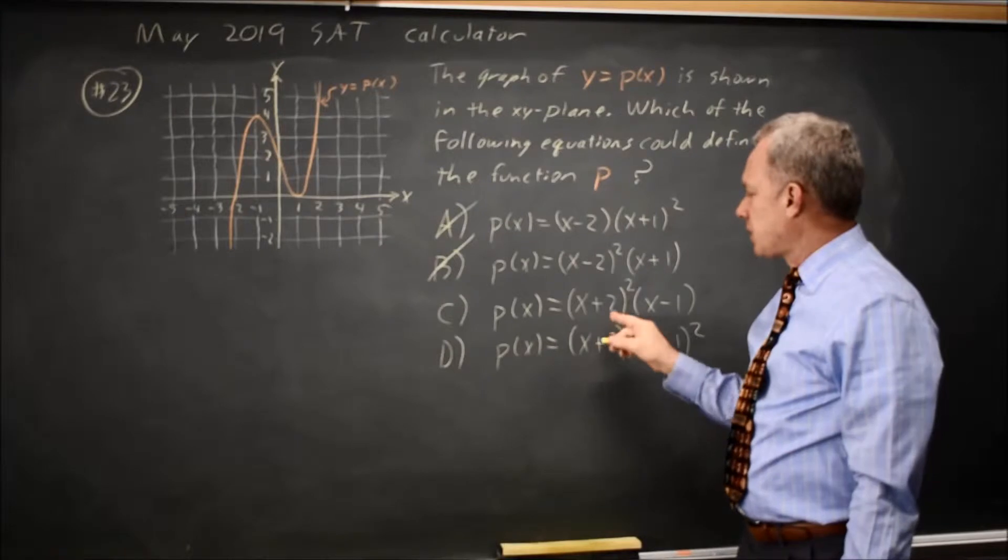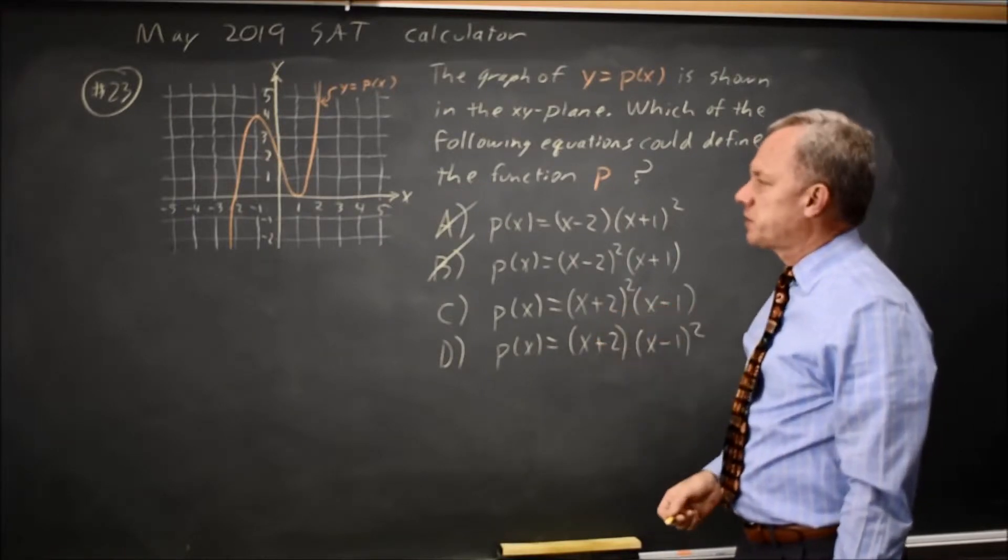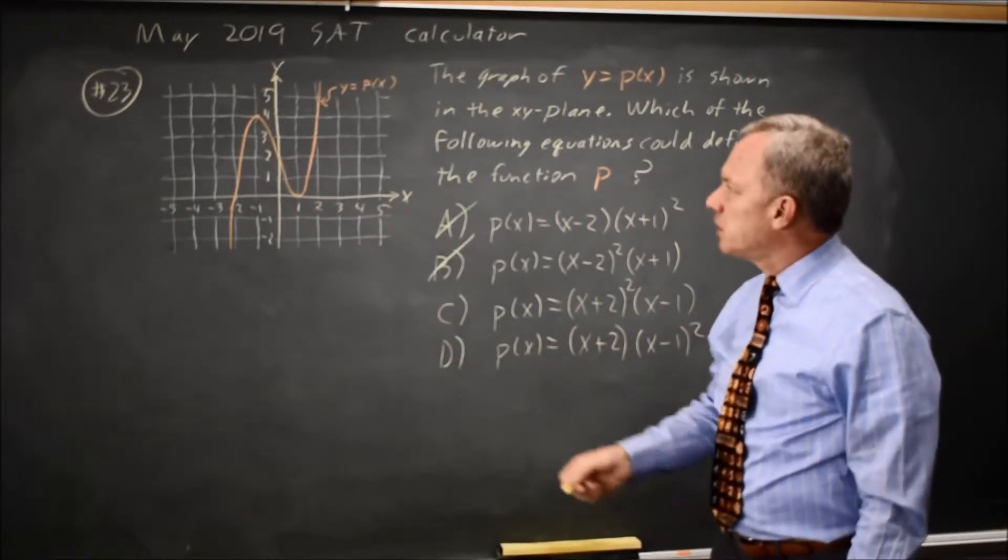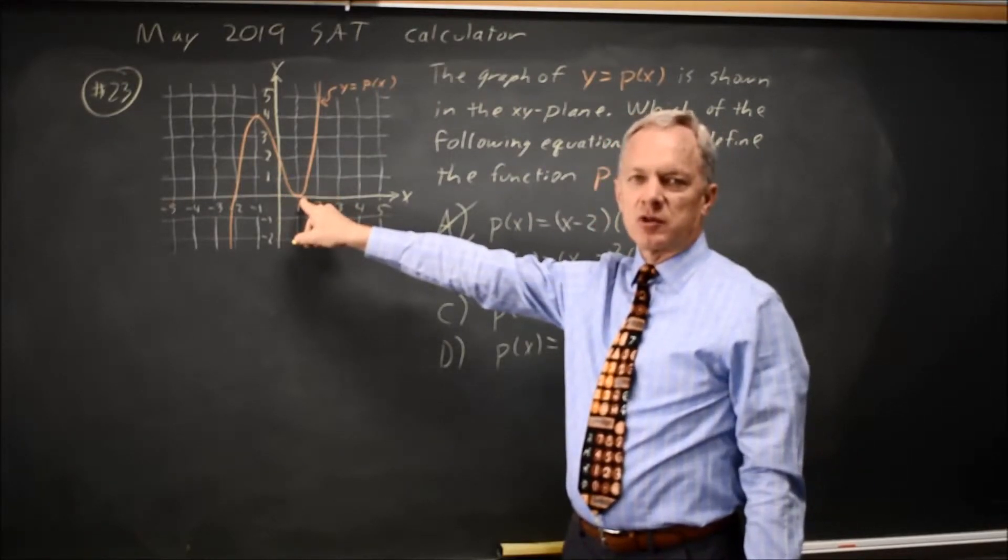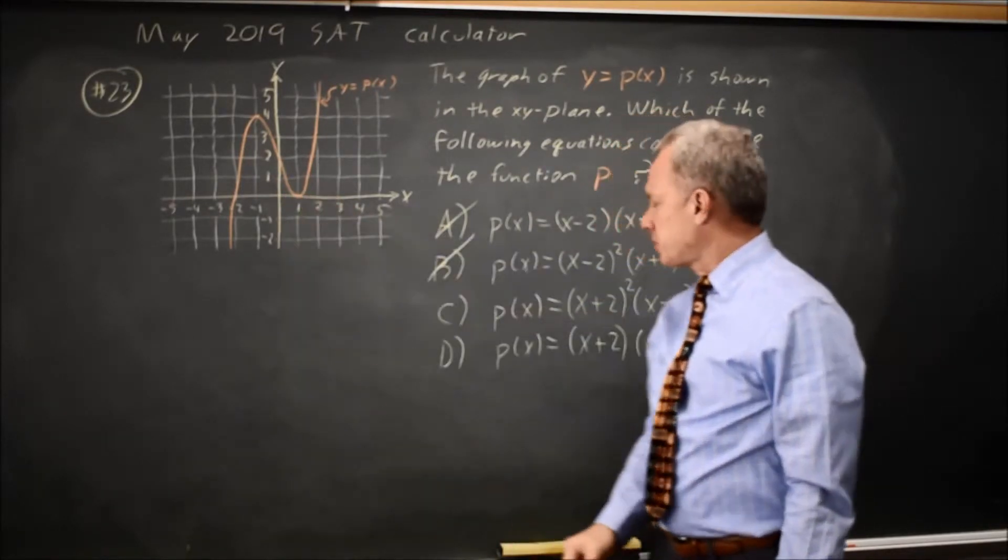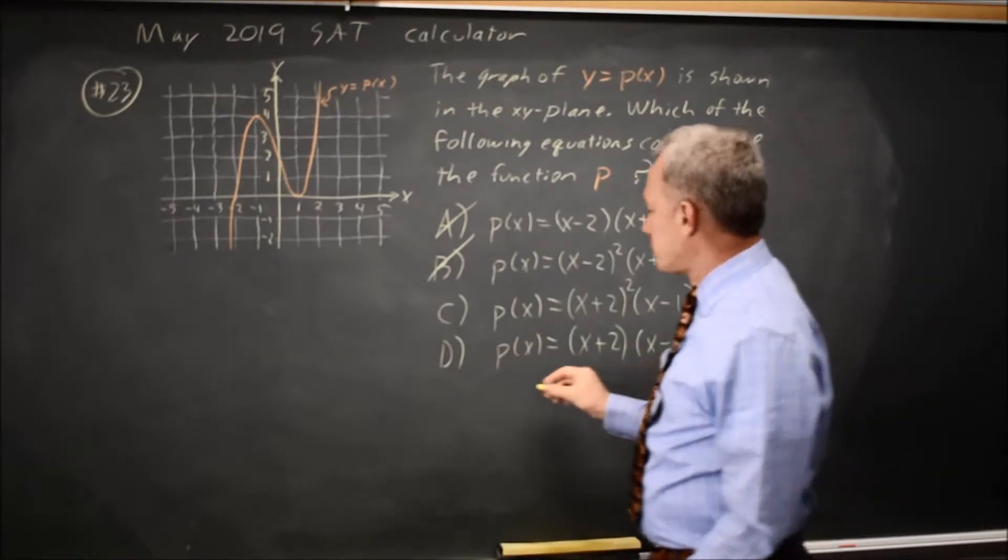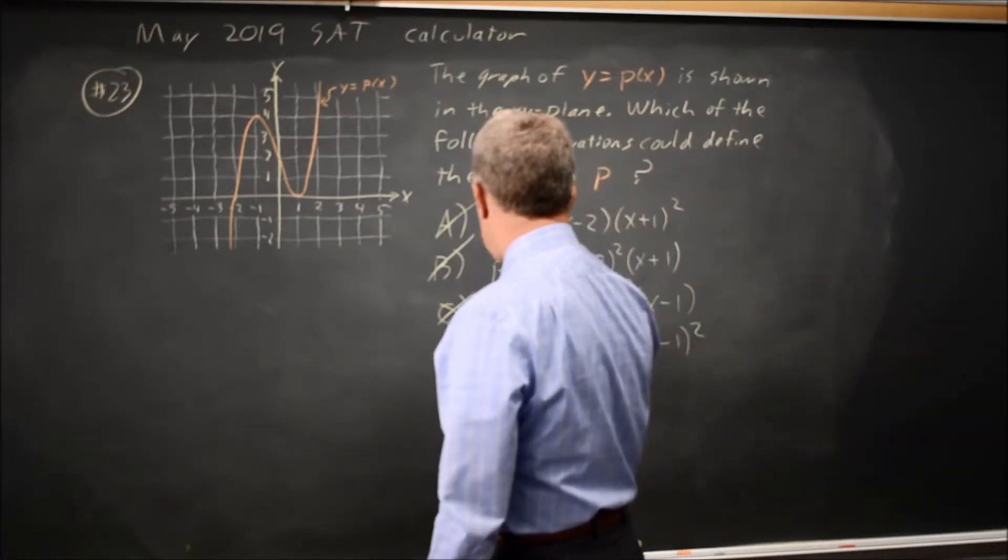Then the question is, is the x plus 2 squared or is the x minus 1 the one that's squared? And since we touch the x-axis at x equals 1 without crossing the x-axis, that factor is the one that's squared. So the correct choice is D and not C.